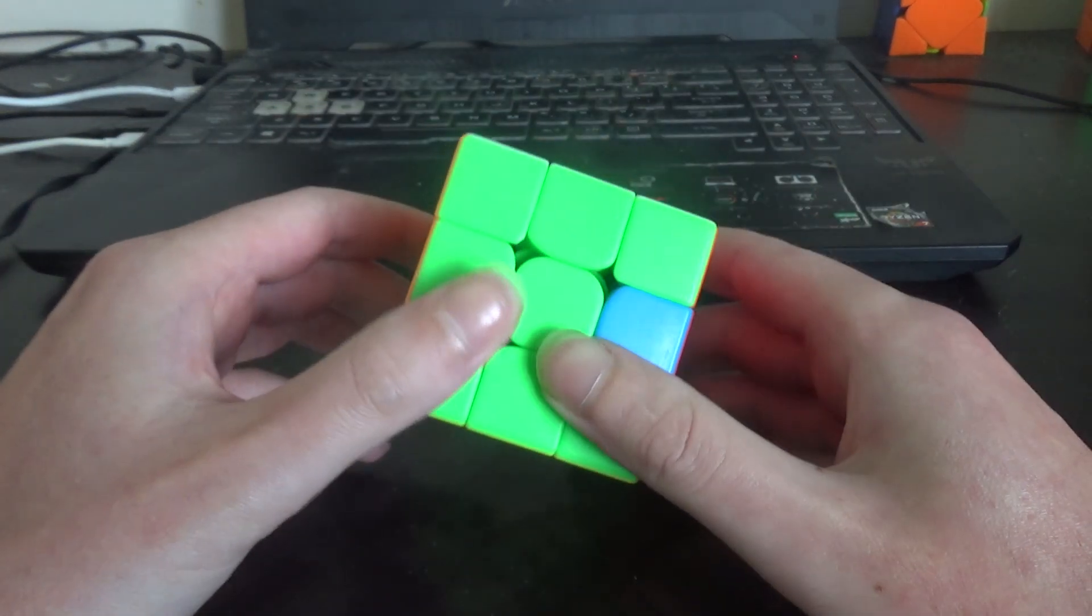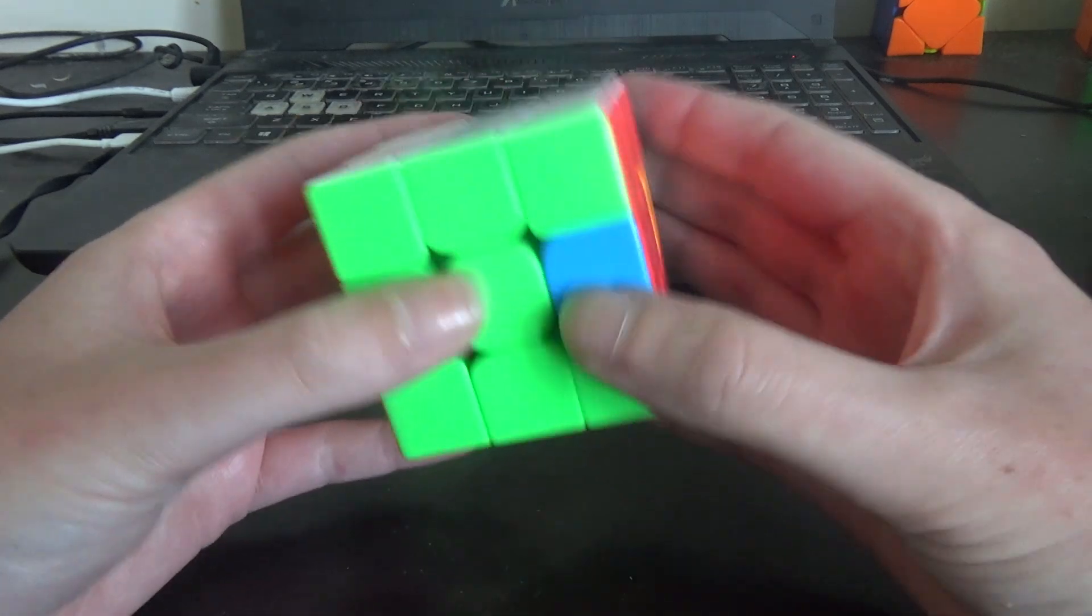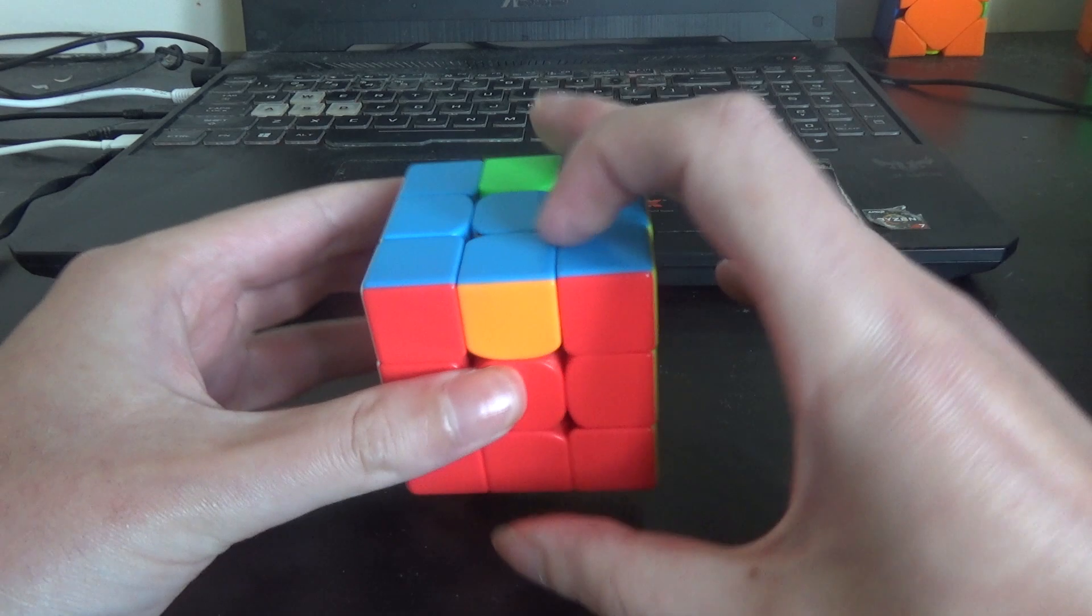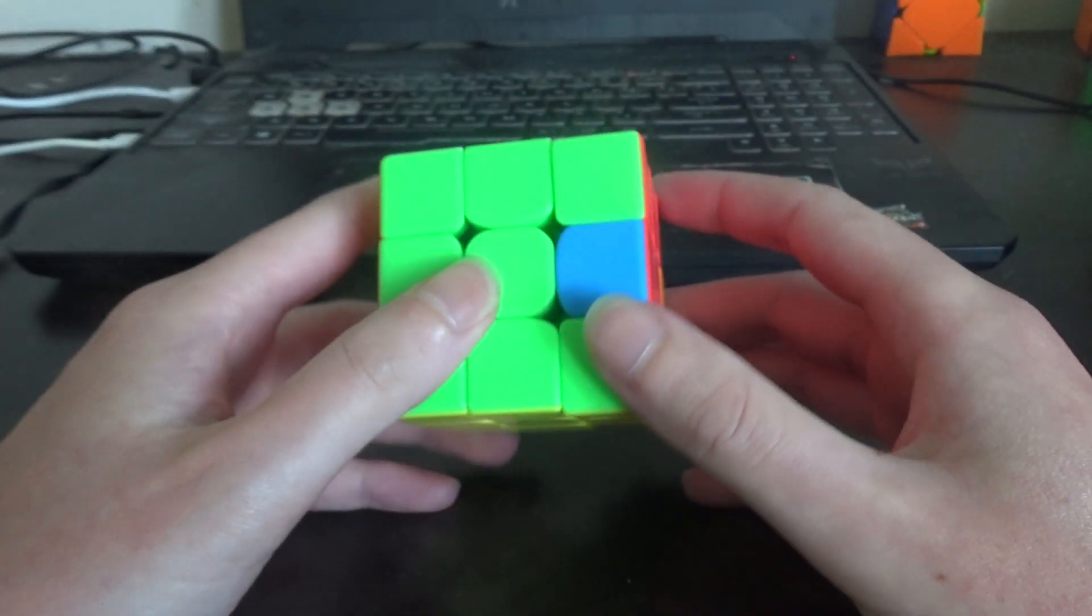Most of the time with a DR solve, especially with HTR, you'll end with leaving a slice of pieces between the DR layers. This could be anything from 3E to 2E2E to 4 centers or even 4 centers plus 3E or 2E2E.